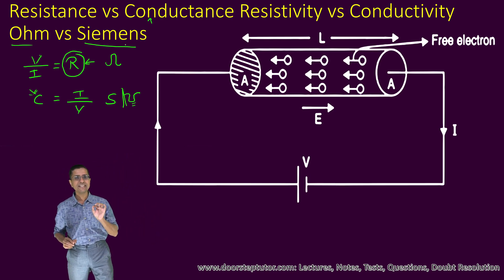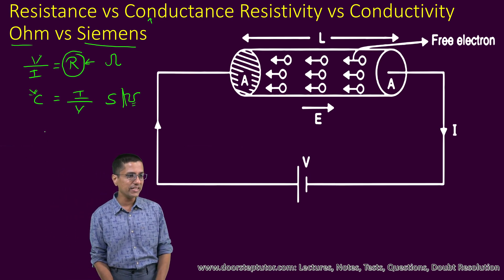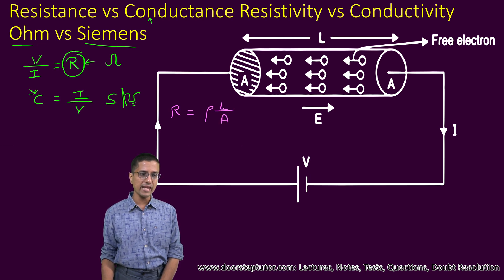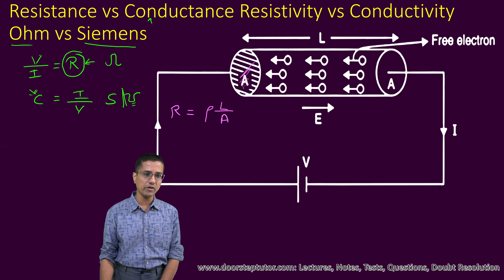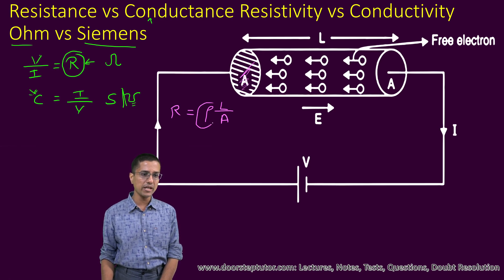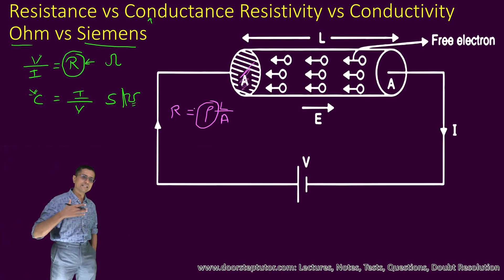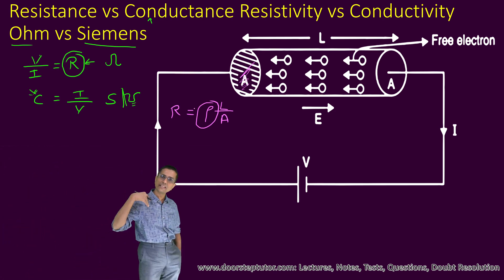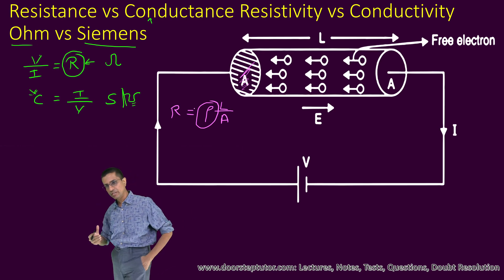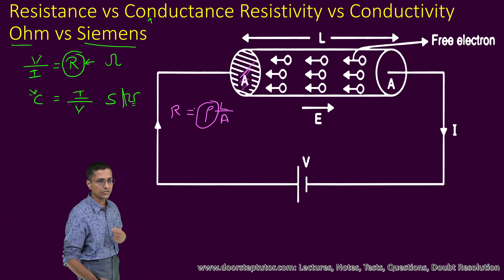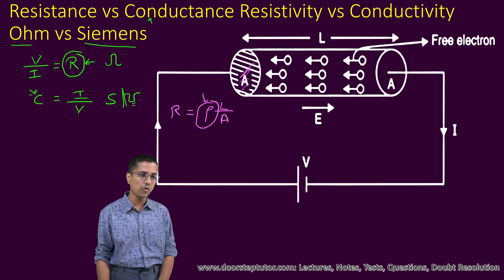The next thing we deal with is resistivity. The resistance R is given by the formula R = ρL/A, where L is the length of the conductor, A is the cross-sectional area, and ρ (rho) is the resistivity. Resistance is directly proportional to length and inversely proportional to area. The constant of proportionality is rho, which is the resistivity.